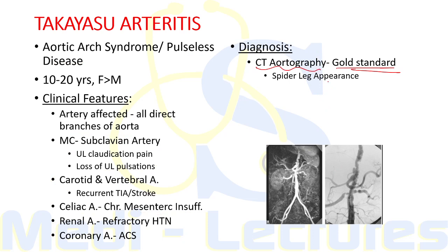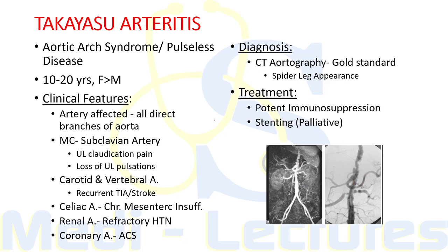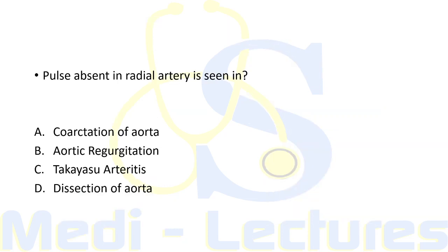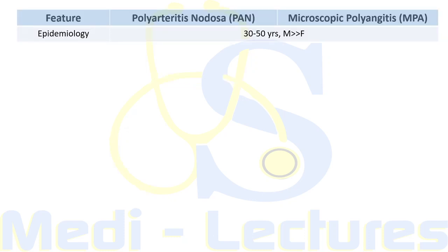The gold standard investigation for Takayasu Arteritis is CT angiography, which shows a typical spider-leg appearance with nodular involvement of the vessel wall. For treatment, potent immunosuppression with steroids is used, and palliative stenting of the affected artery can also be done. A straightforward exam point: absent radial pulse is seen in Takayasu Arteritis.